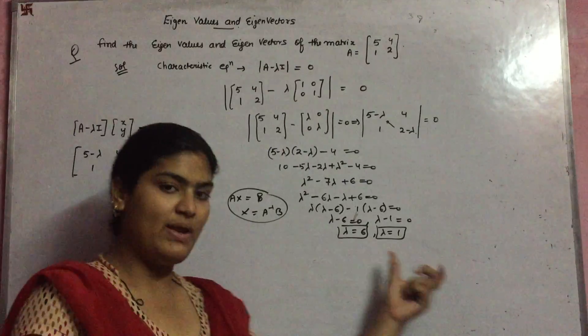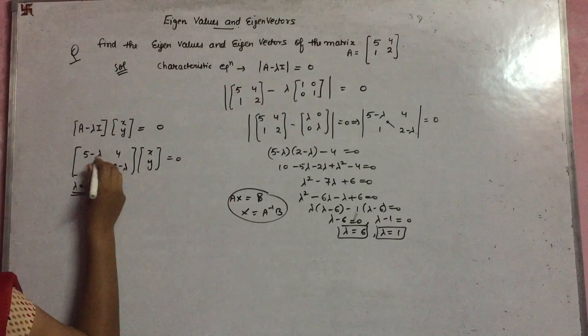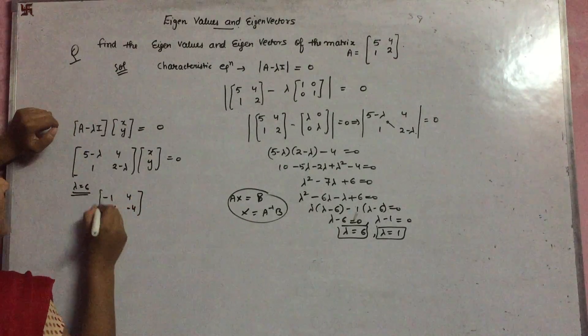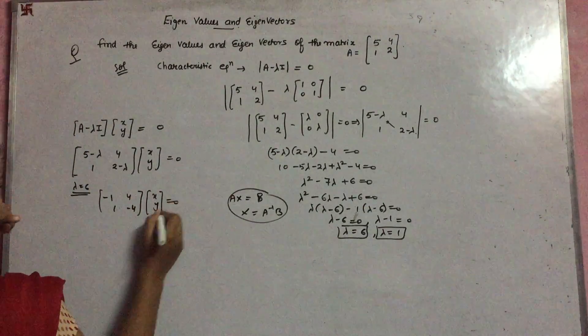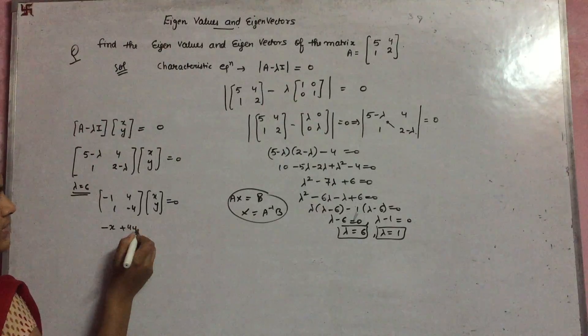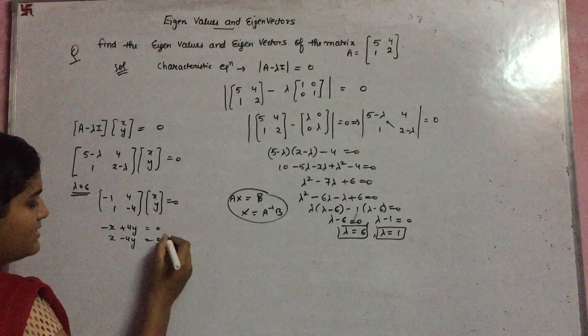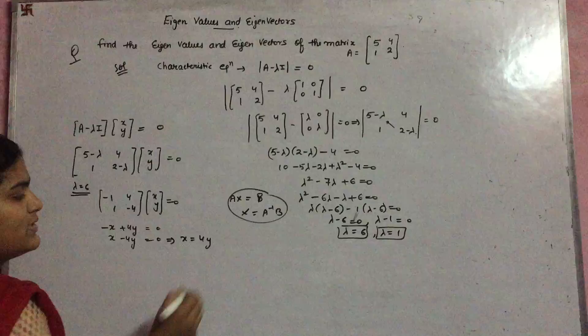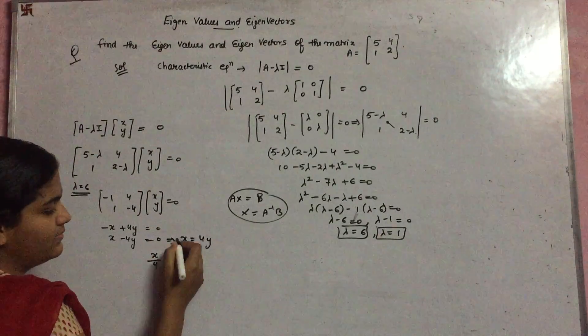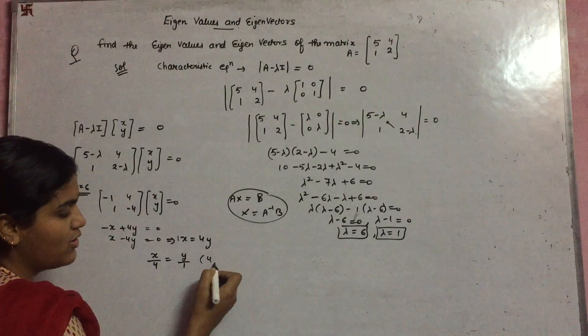Now just put the values of lambda into the corresponding equation. Firstly, if you put λ = 6: [[5-6, 4],[1, 2-6]][x,y] = [[-1, 4],[1, -4]][x,y]. Multiply: -x + 4y = 0 and x - 4y = 0. These are the same equation, so x = 4y. Take 4 and 1 as denominators, so 4 and 1 are your eigenvectors.